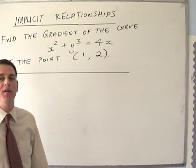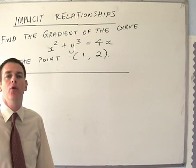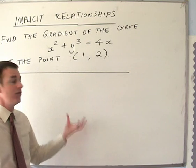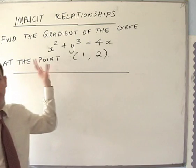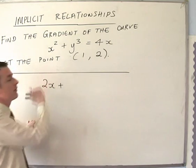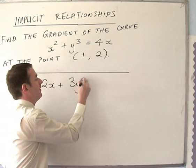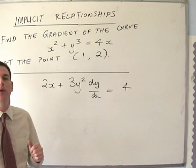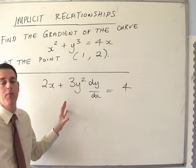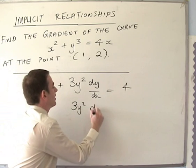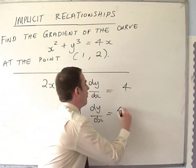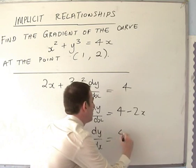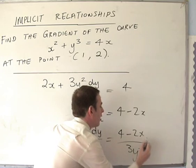Another implicit relationship question: find the gradient of the curve x squared plus y cubed equals 4x at the point (1, 2). We differentiate all the way through and then rearrange to get dy/dx equal to something. Differentiating: x squared gives 2x as normal; the differential of y cubed is 3y squared times dy/dx; and 4x differentiates to 4. We rearrange: 3y squared dy/dx equals 4 minus 2x, so dy/dx equals (4 minus 2x) all over 3y squared.